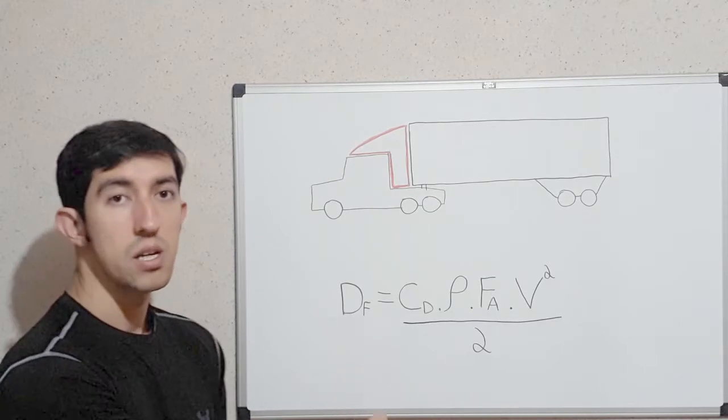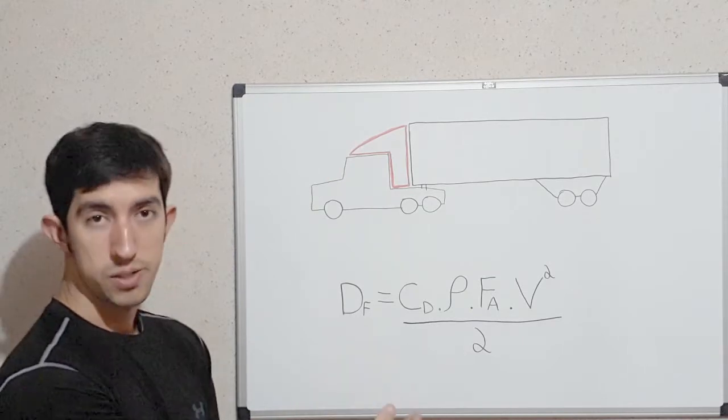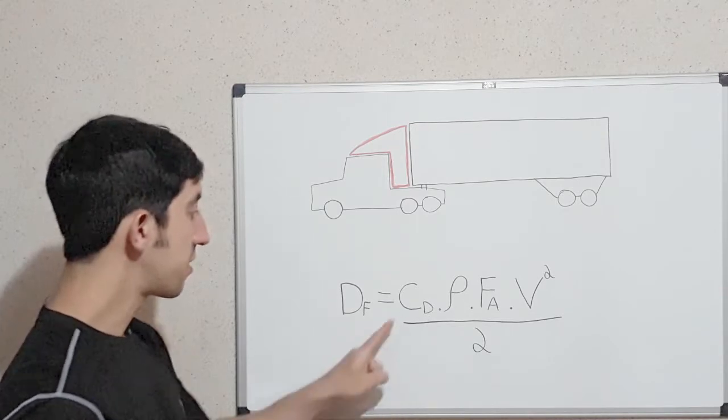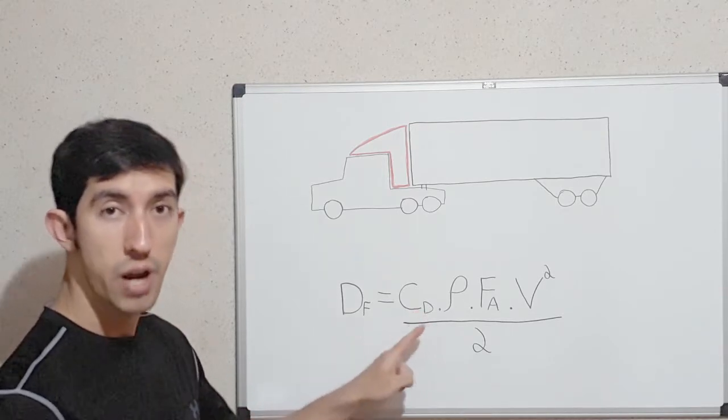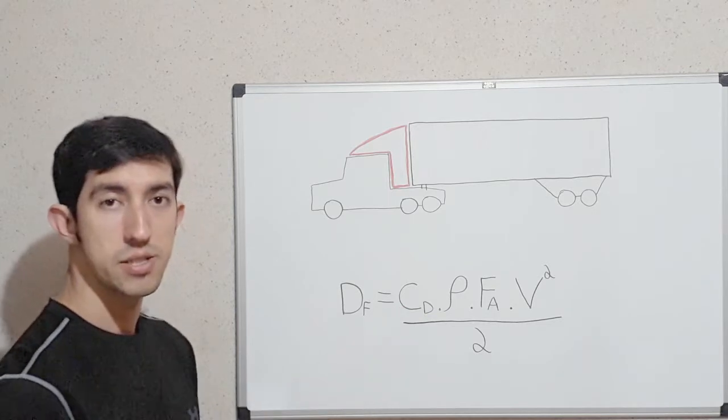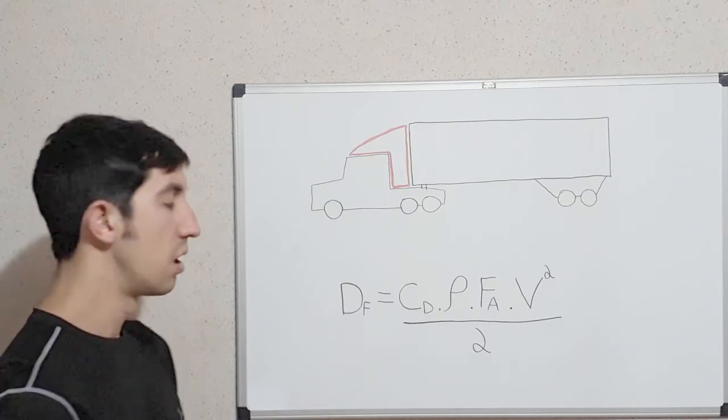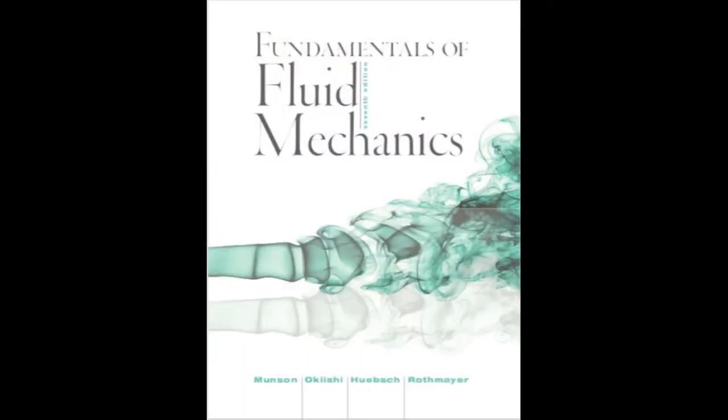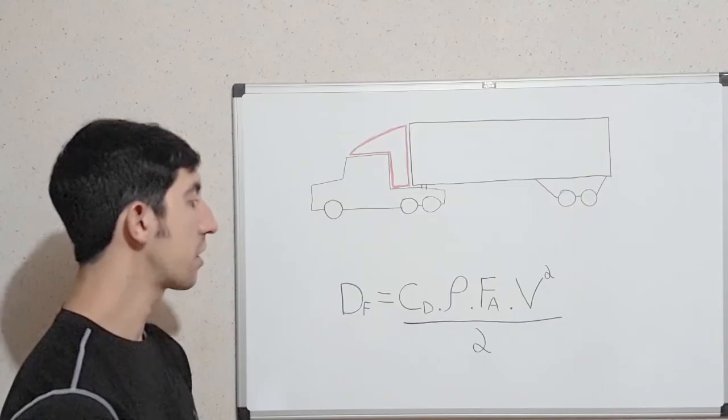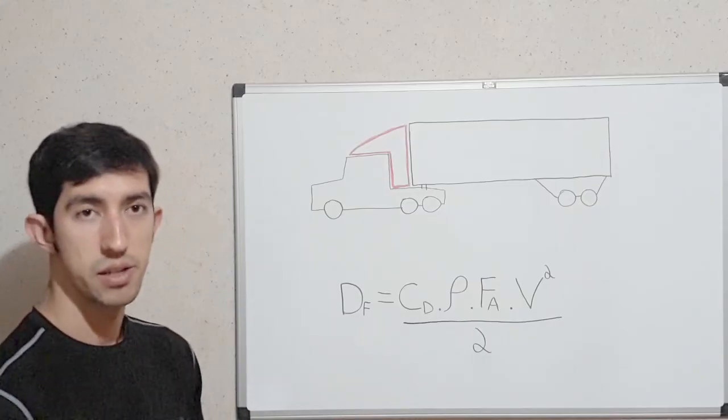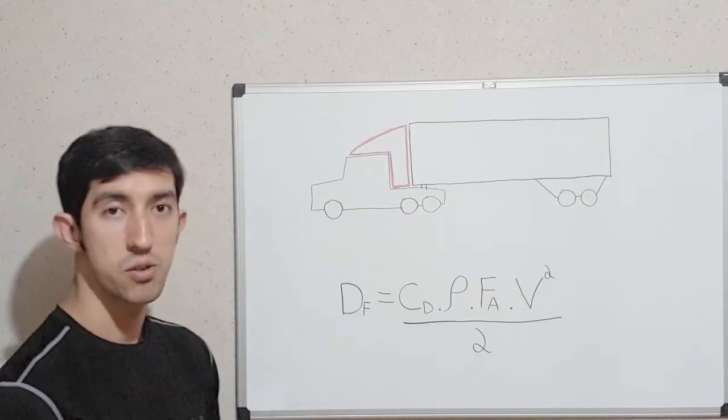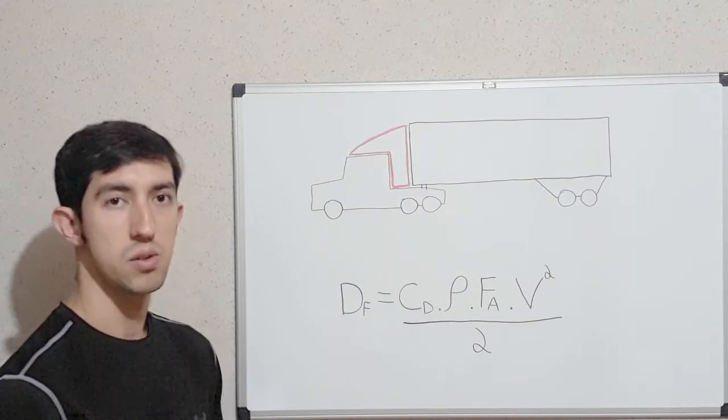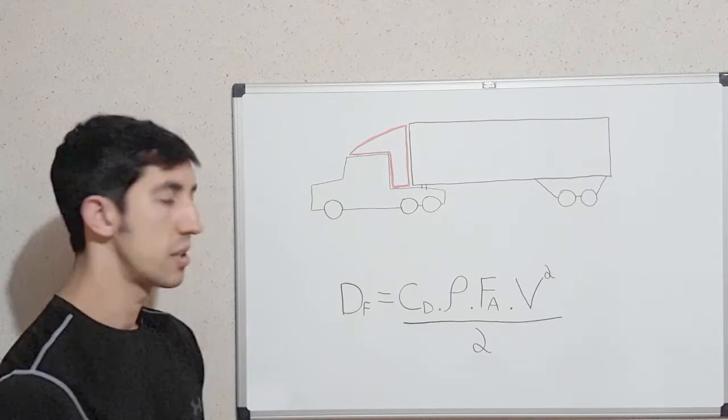So this is the formula of the drag force. DF is drag force. CD is the coefficient of drag. We can find this coefficient of drag in this book, Fundamentals of Fluid Mechanics, or you can find on the internet. Depends on the model that you are applying. If you are applying to a car, you can find that on the internet.